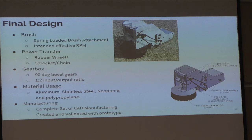We picked a brush that worked with rubber wheels capable of gripping the slick clarifier surface. Power was transferred from the wheels to the brush using a chain and sprocket system in conjunction with a 2-to-1 gearbox, which gave us the speed we needed. All materials were corrosion resistant and stable in wet environments, and the entire machine was easily manufacturable and came with a full packet of drawings.